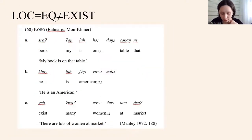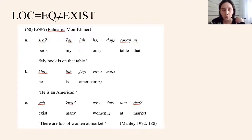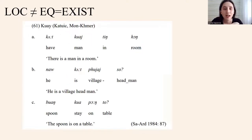The fourth strategy is a language that uses the same marking for locative and equative nonverbal predications, and a separate one for existential. The fifth type is where equative and existential predications are marked the same, but locative is different.